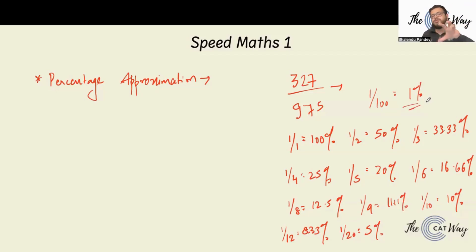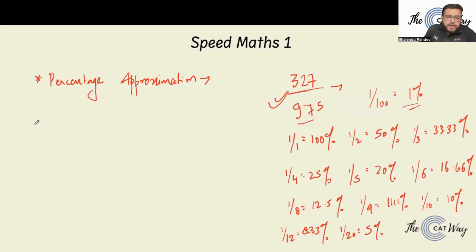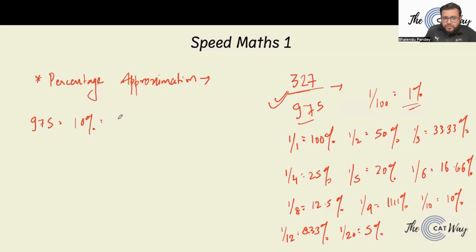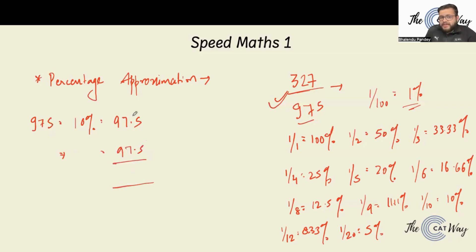Once you know these values, your solution and calculation become very easy. For example, let's calculate 327 out of 975. The 10% value is 975 divided by 10, which gives 97.5. Another 10% is another 97.5. Adding them: 90+90=180, 7+7=14, plus the decimals gives 195. So we are already above 20%.